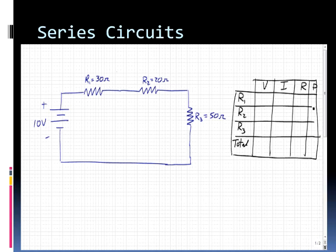Alright, there's my table. What can I fill in right away? Well I know the total voltage is 10 volts because that's the voltage on the battery and I can fill in my resistances. R1 is 30 ohms, R2 is 20 ohms and R3 is 50 ohms.